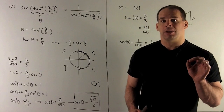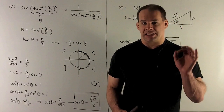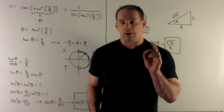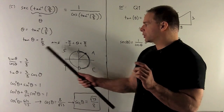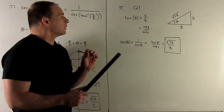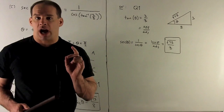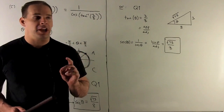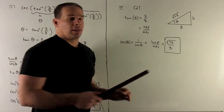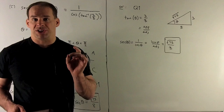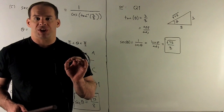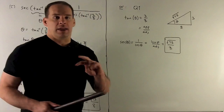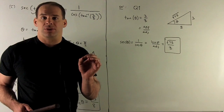We use the positive, so cosine equals 8 over square root of 73, and flipping it over gives secant. Our answer is square root of 73 over 8. Another way: using tan theta equals 3 over 8, set up a right triangle where opposite equals 3 and adjacent equals 8. The hypotenuse is then square root of 73. Secant is one over cosine, cosine is adjacent over hypotenuse — that's 8 over square root of 73 — and flipping it gives secant equals square root of 73 over 8, confirming our answer.